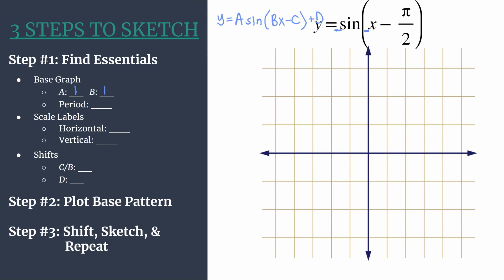We can also use B to find the period, so to do that for sine take two pi and divide by B. So two pi divided by one of course is two pi.